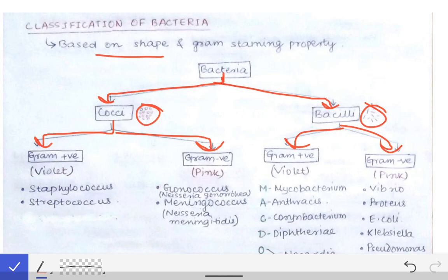The gram positive cocci we are most concerned with in microbiology for MBBS are Staphylococcus and Streptococcus — these are the two most important gram positive cocci. Similarly, the gram negative cocci we are most concerned with are Gonococcus and Meningococcus.